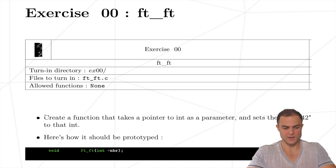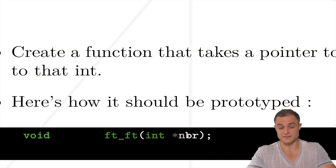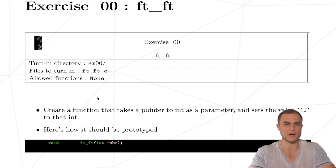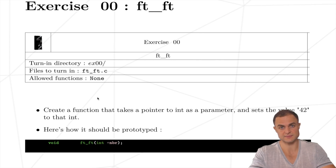As a first exercise, we have to create a function that takes a pointer to an integer as a parameter and sets the value 42 to that integer. Here we have the prototype — a function that doesn't return any value, but takes a pointer to an integer called nbr. I won't make a pure theory tutorial; there are plenty of really good resources online. I will explain the theory through practice, because I think this is the best way to absorb new knowledge. If you know that variables inside your RAM have a specific address, to get that address you just need the ampersand operator, and to dereference that address you need the star. You're pretty much already able to start the exercises.